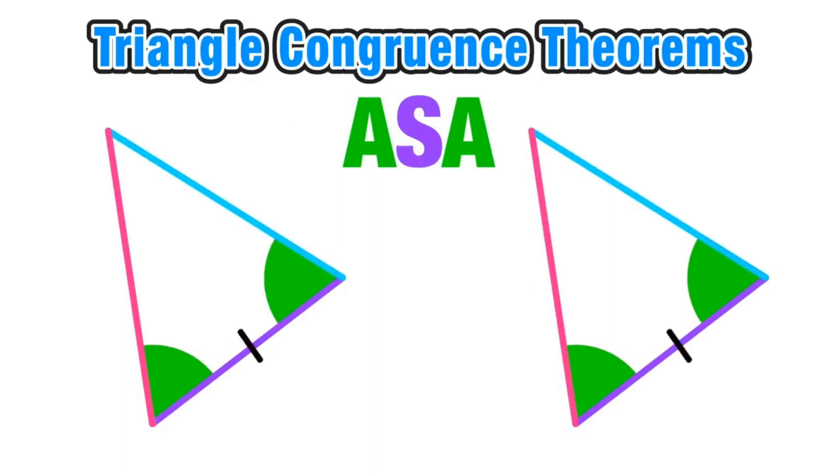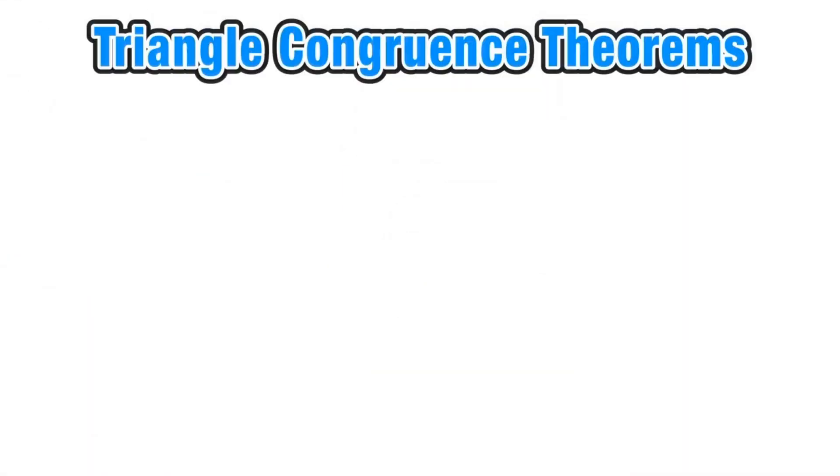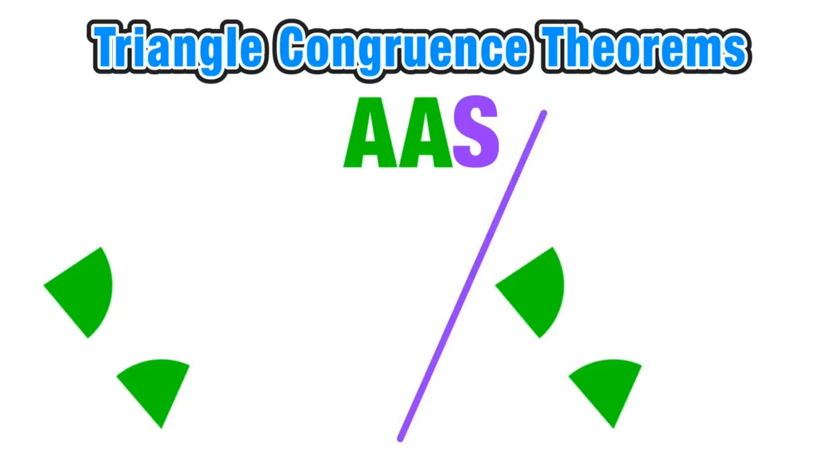Now for the angle-angle-side triangle congruence theorem, we still have two angles and one side, it's just the order that's going to change. So in both triangles we have one congruent angle, and then another congruent angle, and then our congruent side is after those two consecutive angles.